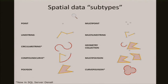Now let's talk about spatial types. We have two types — geometry and geography — and we support all subtypes or classes for each one. Some are new to SQL Server Denali. In SQL Server 2008 we have point, line string, polygon, multi-polygon, multi-point. New in Denali: Compound Curve, Circular String, Curve Polygon. This gives us a rich set of classes to program against.